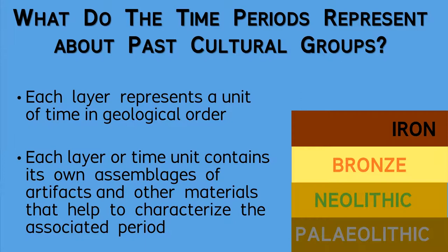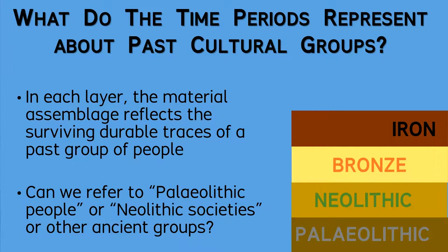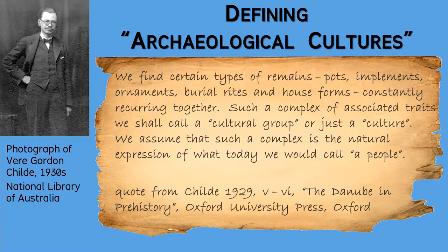The results naturally have confirmed that artifacts and other material indicators indeed have changed through time. When we describe the material inventories of each time period, then essentially we are describing the durable material remnants of real people who once lived in the past. We can consider how these records might reflect portions of the cultural groups or societies that once had existed. These basic concepts allowed Vere Gordon Childe and others to formalize the academic thoughts about archaeological cultures, with the core idea being about defining ancient cultures on the basis of their archaeological signatures, while acknowledging that these surviving material reflections are incomplete approximations of the original living cultural groups.